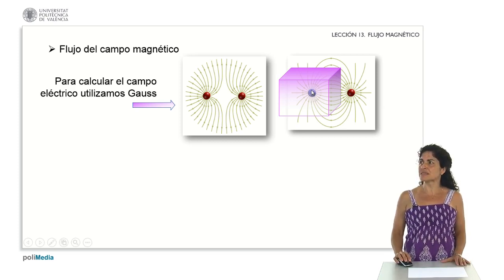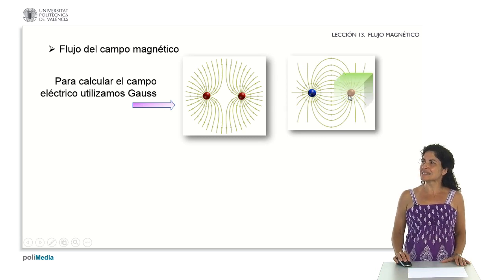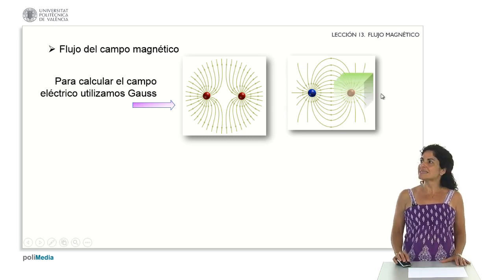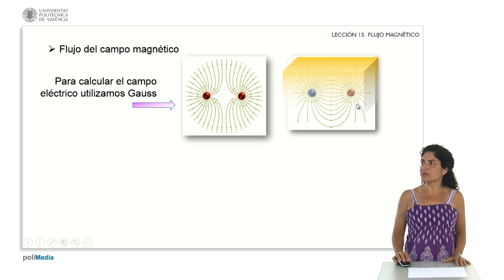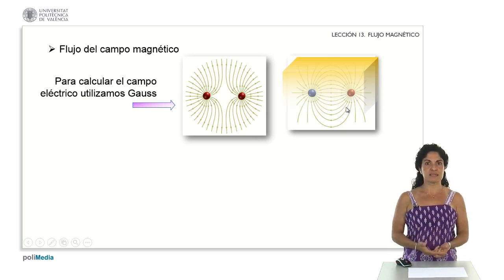It could be through lines entering the surface if it was a negative charge, lines leaving the surface altogether if the charge was positive, or I could enclose both charges by a closed surface and do the analysis in that case.